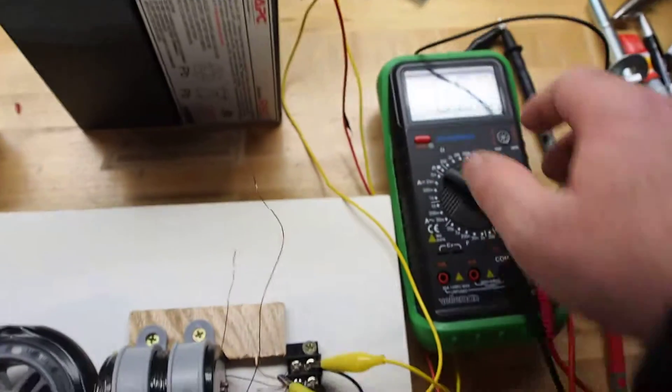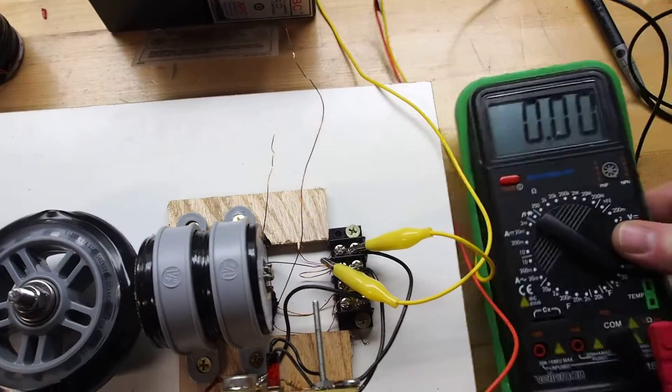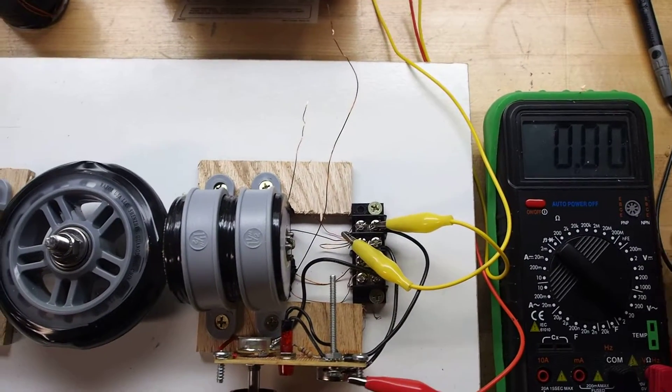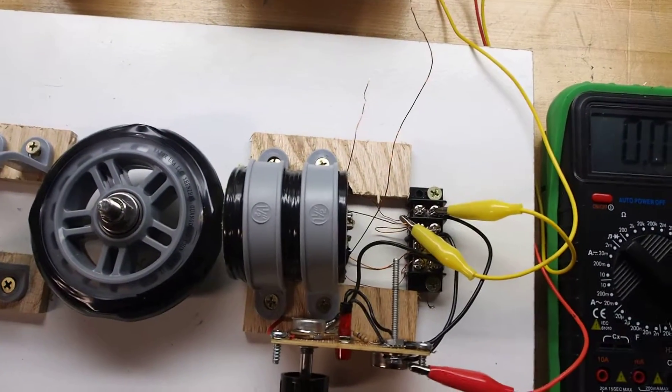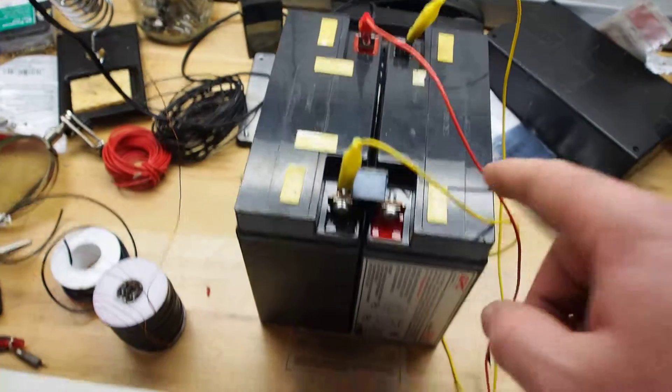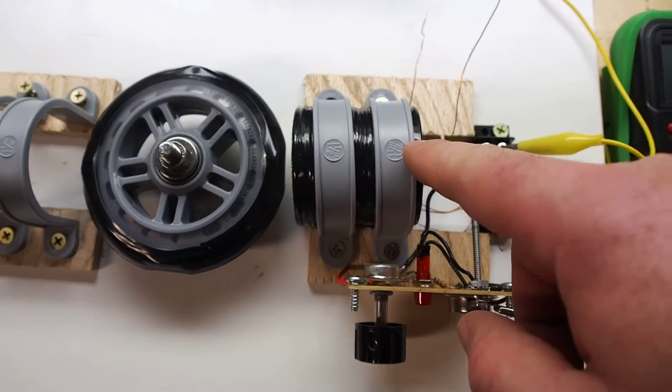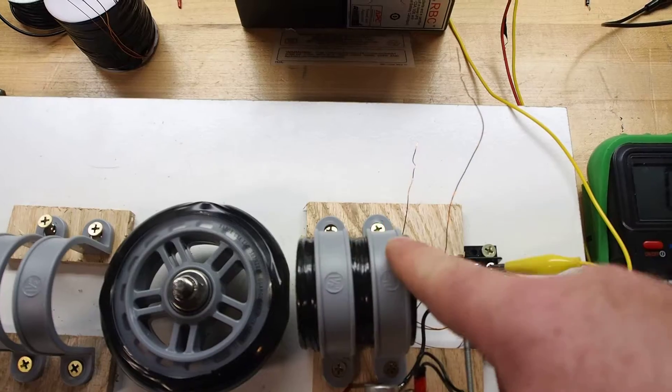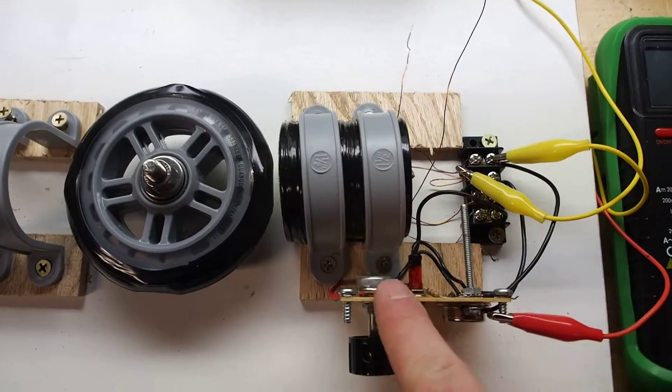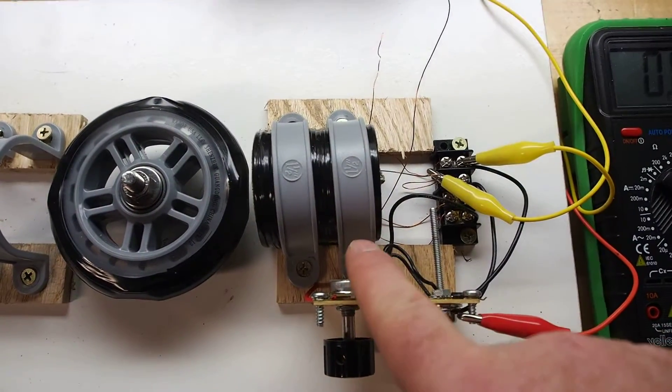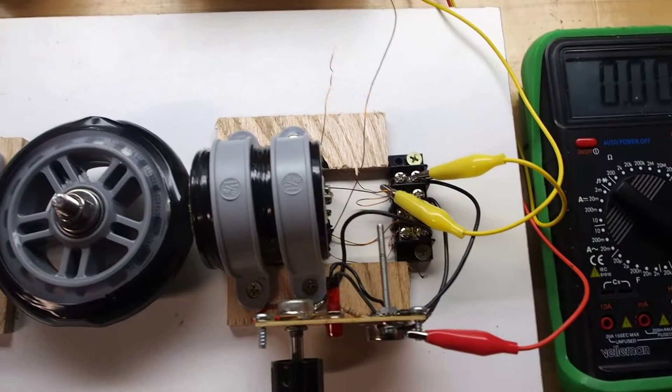But what I wanted to show you here, if I can do it this time, is how when a Bedini recharges the battery, it's not pulling the charge from the power coil. So the back EMF coming from the power coil is wasted. It's pulling charge from the trigger coil, which is a smaller wire.